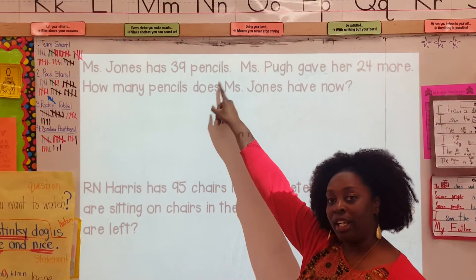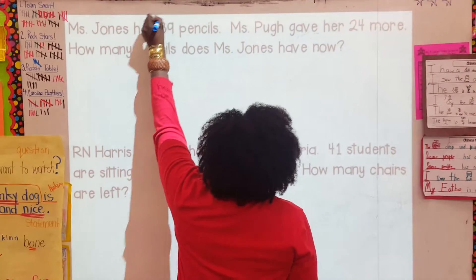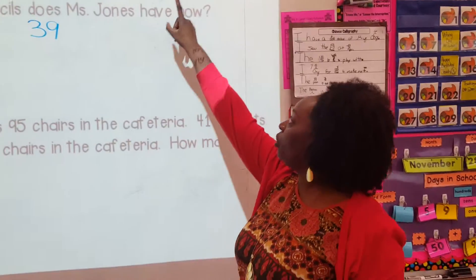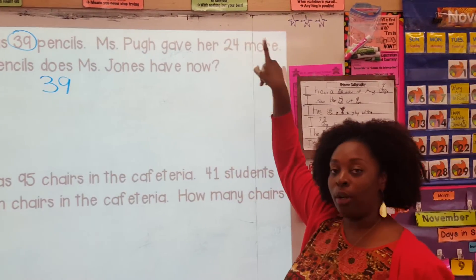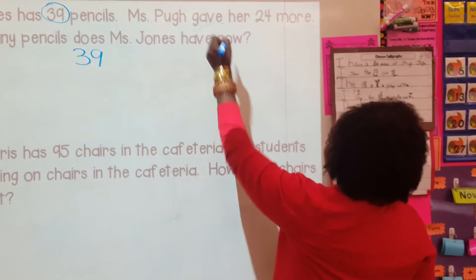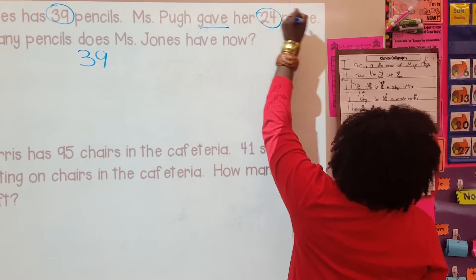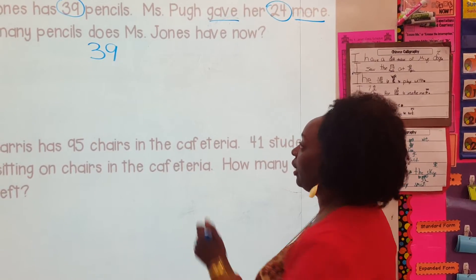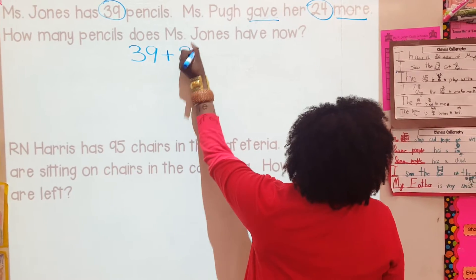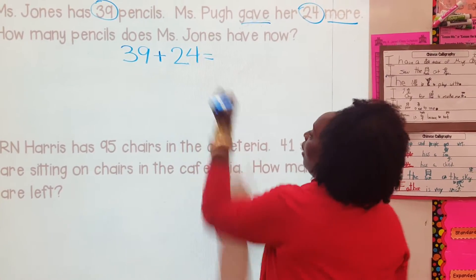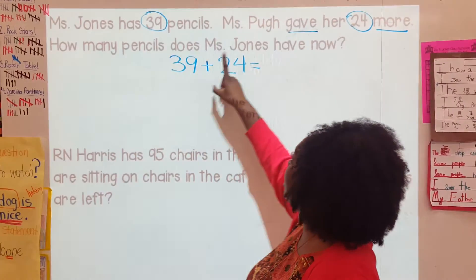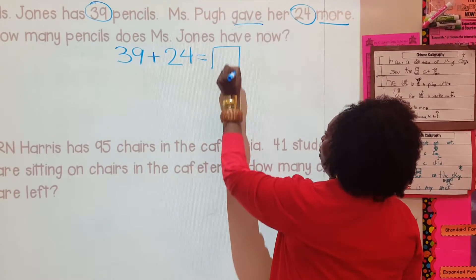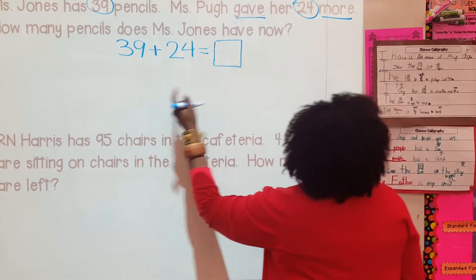Ms. Jones has 39 pencils — that's the first piece of information. I'm going to circle 39 and write the number here. Ms. Pugh gave her 24 more. She gave me 24 more, so what kind of math are we going to do? We're going to add. This is a result unknown problem — we have to figure out what the total is now from what she gave me.